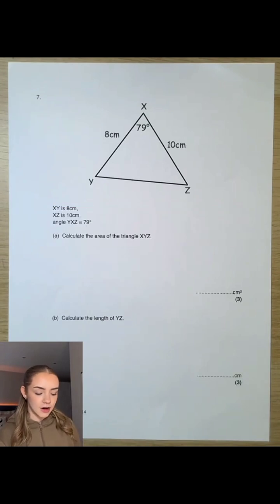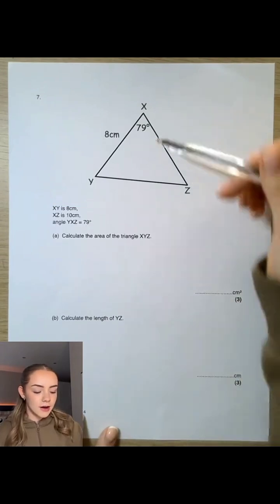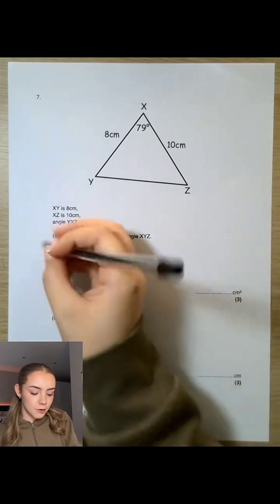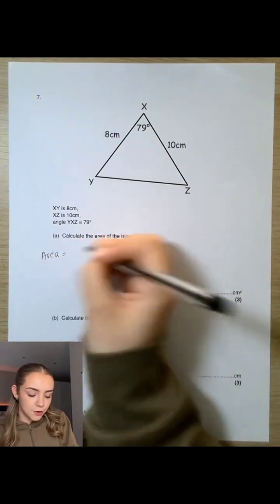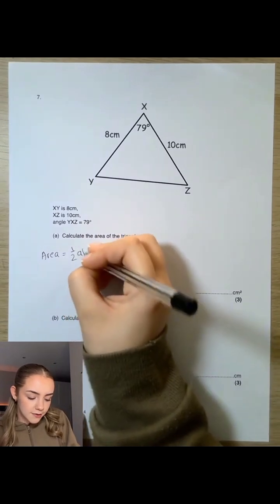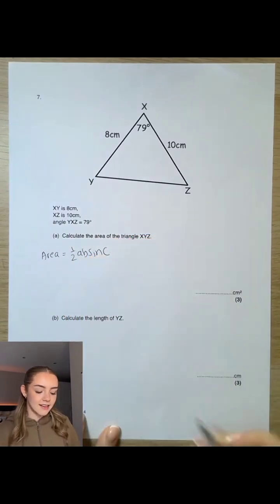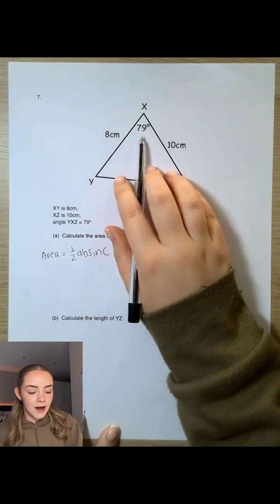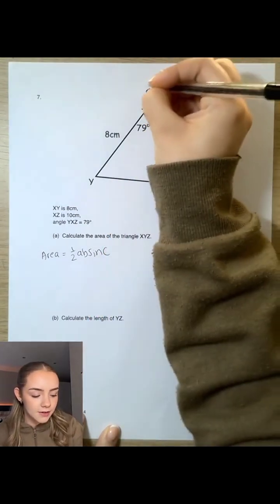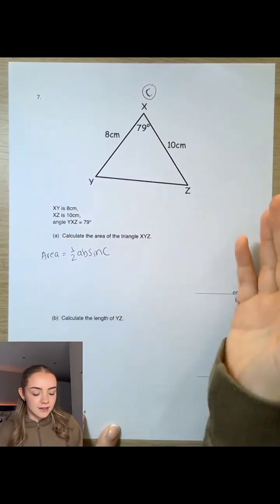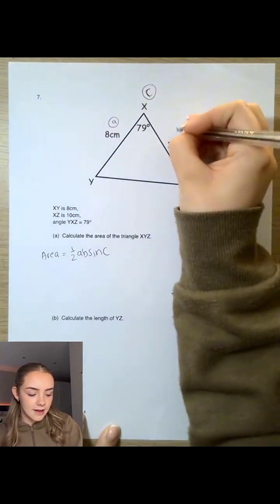So we want to calculate the area of triangle XYZ. Because we don't have base and height, this is where we want to use this equation here, which is given on your formula sheet, where the area is half ab sine c. So this includes one of our angles. Now we have this angle here, so we call this angle c. And the two sides adjacent to angle c, we can label as a and b.